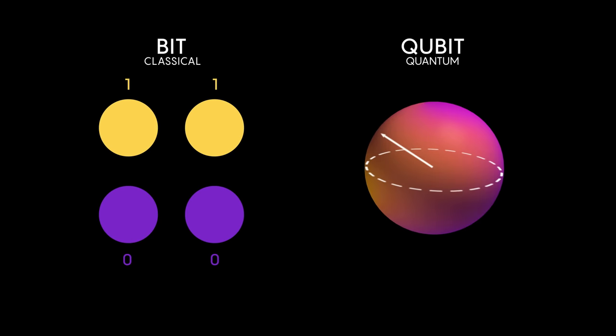A bit is binary. It stores information in strings of binary digits that can only be zero or one. But qubits are made of subatomic particles, so they operate according to subatomic logic.